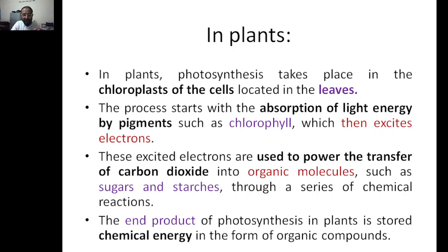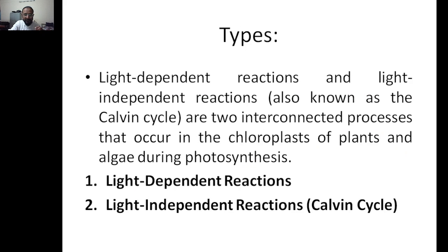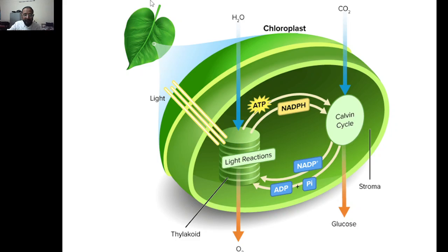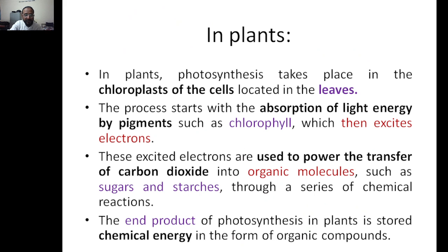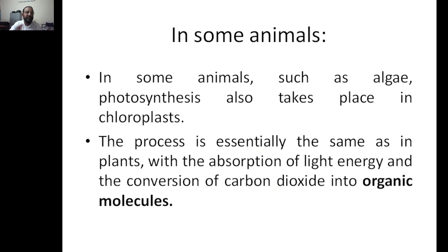In the diagram: the light-dependent reaction breaks water molecules, and the produced electrons are given to the Calvin cycle. Carbon dioxide is then converted into glucose or other organic molecules like sugars. The end product of photosynthesis in plants is stored as chemical energy in the form of organic compounds.